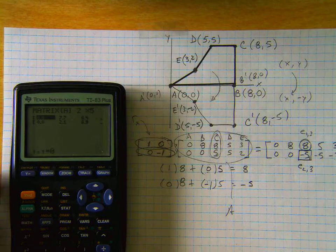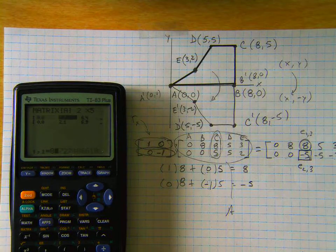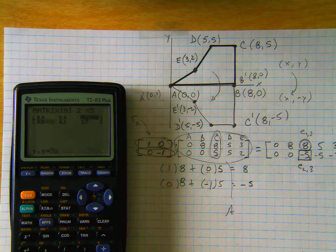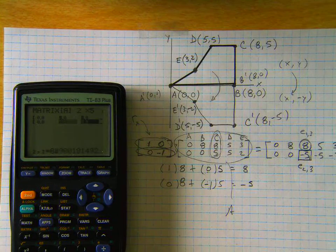And it's 2 by 5. We're going to put in 0, 8, 8, 5, 3, and then the second row is 0, 0, 5, 5, 2.